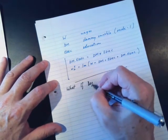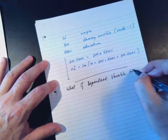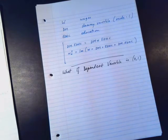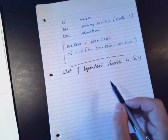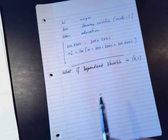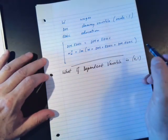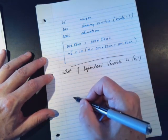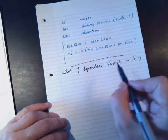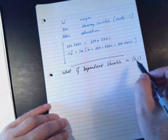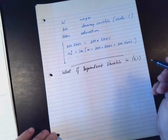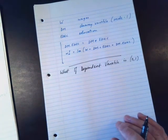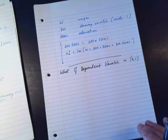One final point: what if the dependent variable is a dummy variable — what if it's 0 or 1? You can still run the regression; it won't crash your computer. But the coefficients are hard to interpret, because the predicted values from that model will not typically be simply 0 or 1 — they can be less than 0 or greater than 1. In this case, we would use a different type of model that constrains the output into the range of 0 and 1. That's a technique we won't cover in this course — it's called probit estimation or logit estimation — but you'd learn that one in another course in econometrics.